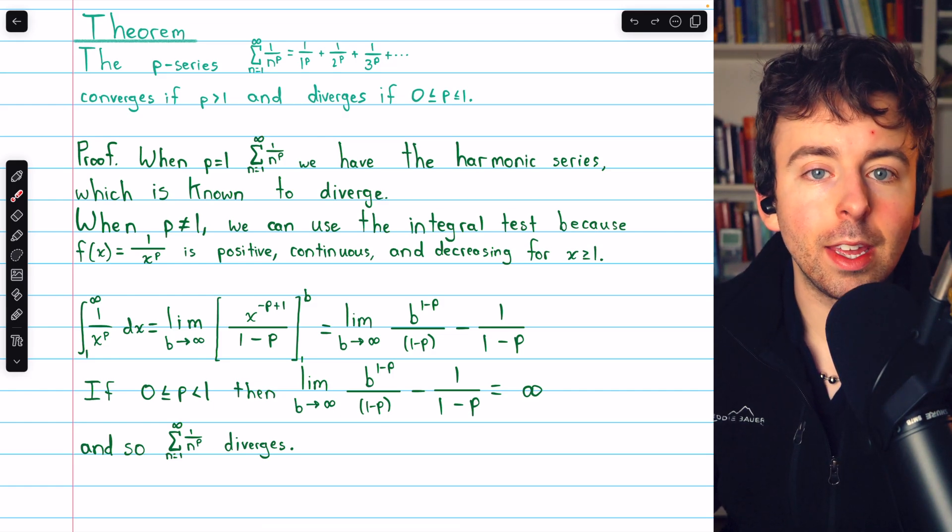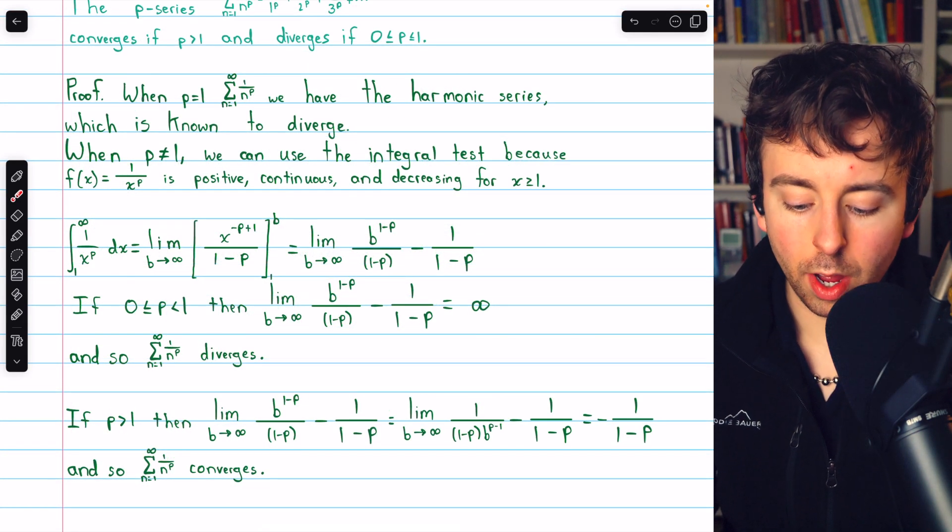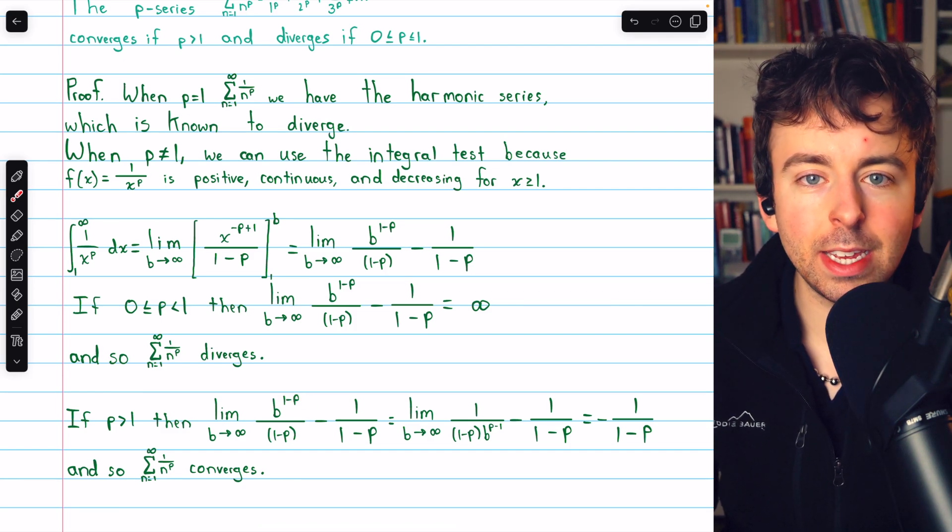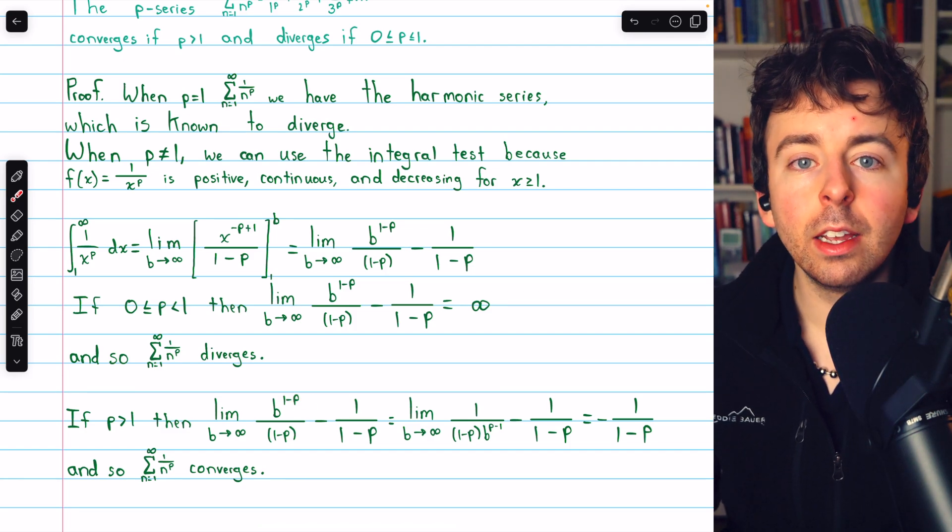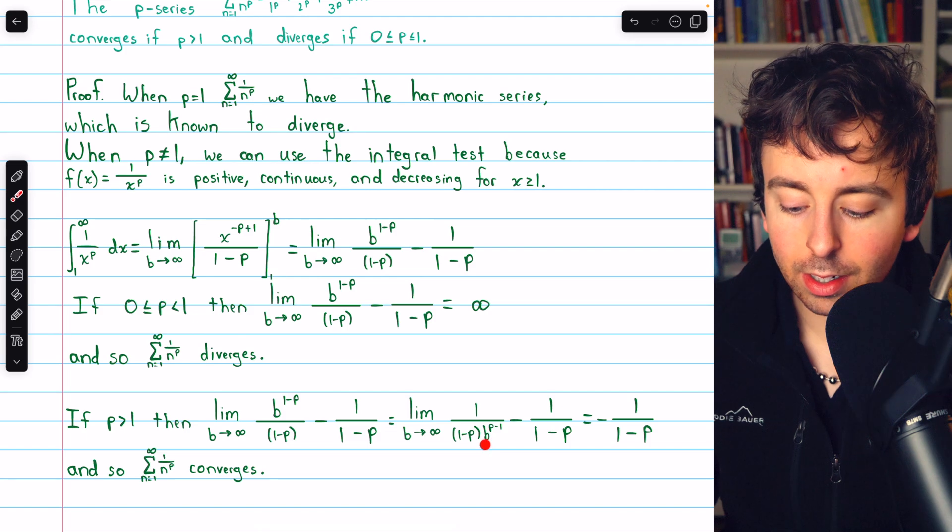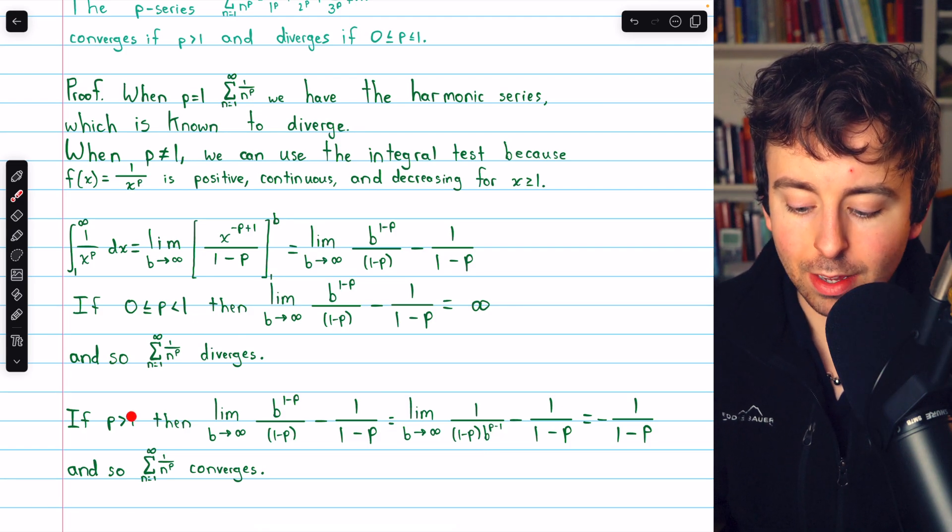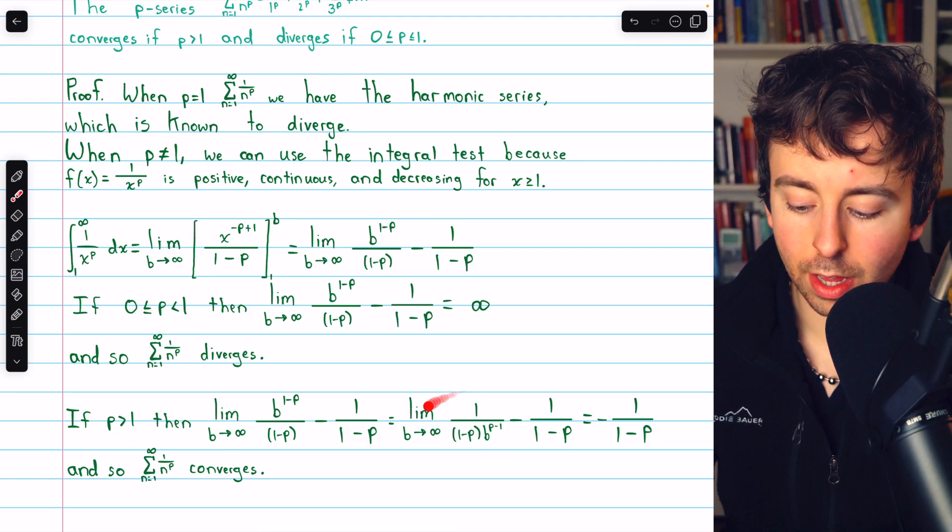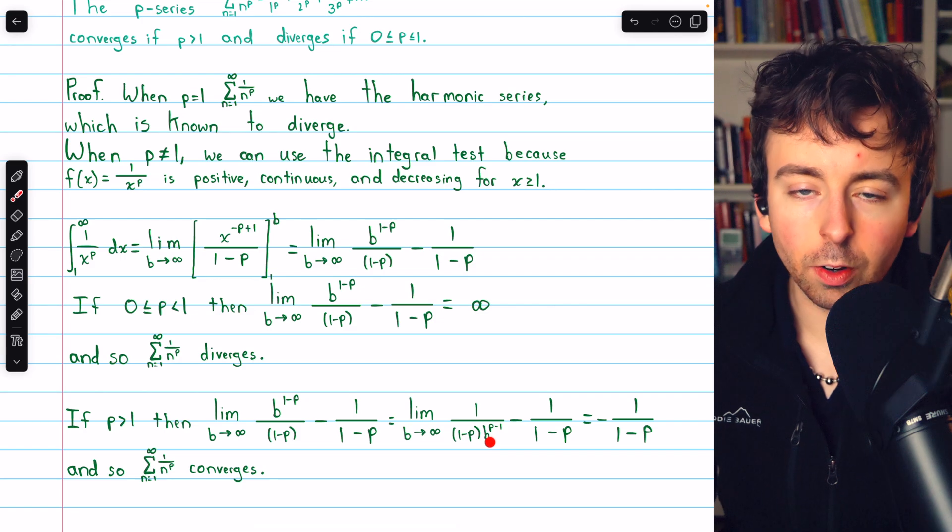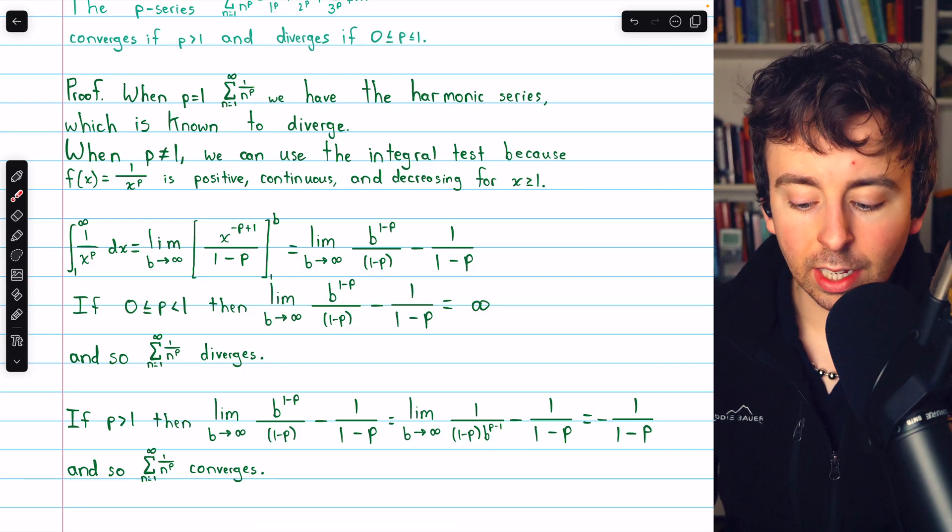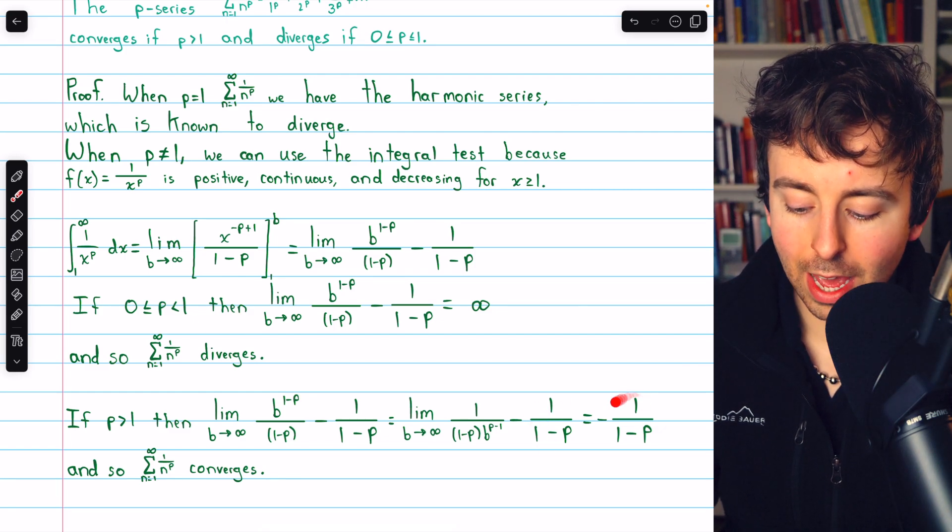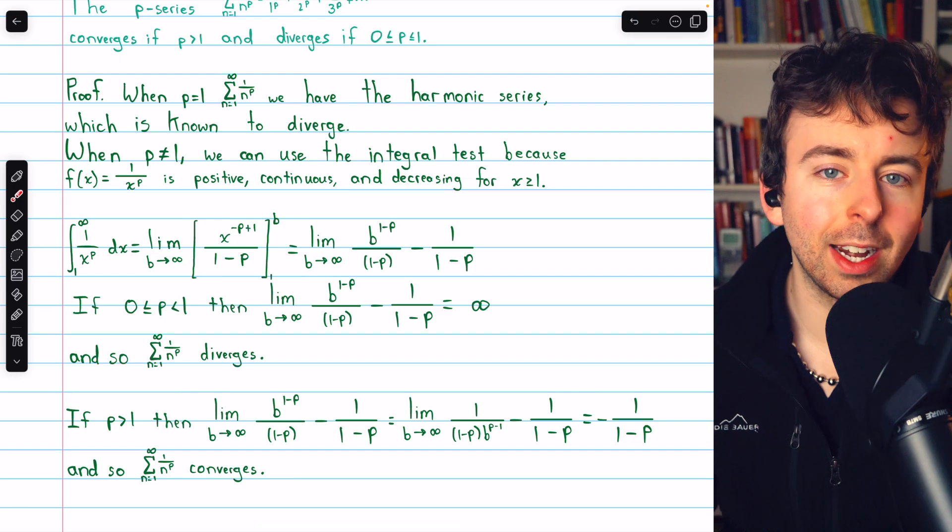Now let's consider when p is greater than 1. If p is greater than 1, then the power of b in this numerator is negative. b to the 1 minus p, that's b to a negative power. So if we move it to the denominator, it will have a positive power, and then would be b to the p minus 1, because p is greater than 1. And clearly, as b goes to infinity, this expression in the denominator will just be going to infinity. So it will be 1 over infinity, which is 0, minus this. So the result will just be minus 1 over 1 minus p, just some finite number.